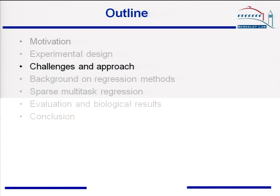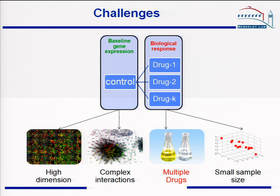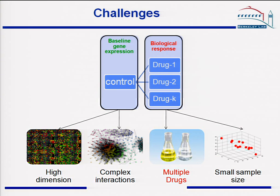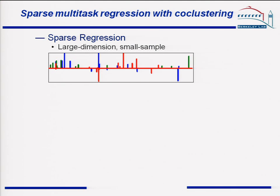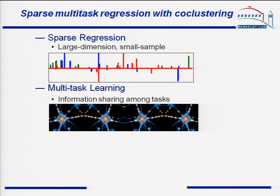We have an awesome challenge and here is the big picture of our approach. The data is very high dimensional. We propose sparse multi-task regression with co-clustering. First, sparse regression helps to remove irrelevant features and performs model selection, which is a very useful tool for high-dimensional data analysis. Second, we combine it with multi-task learning to handle cases where we have multiple related tasks, and learning them in parallel will improve performance and also provides a key insight to solve our problem.